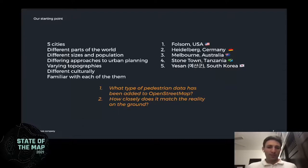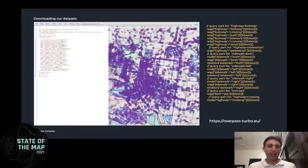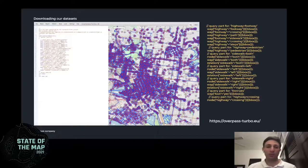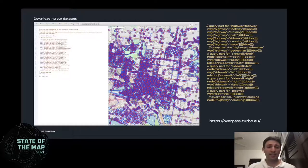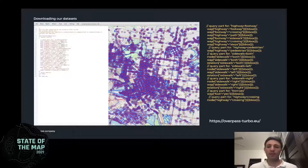With this selection of cities, I was asking two questions: first, what type of pedestrian data has been added to Open Street Map in each area? And second, how closely does it match the reality on the ground? I began by downloading a dataset for each area, compiling a query in Overpass that included a range of tags relevant to pedestrian mapping. I built an initial list, asked colleagues if anything was missing, and they suggested considering areas as well, along with a few extra tag suggestions for line strings.